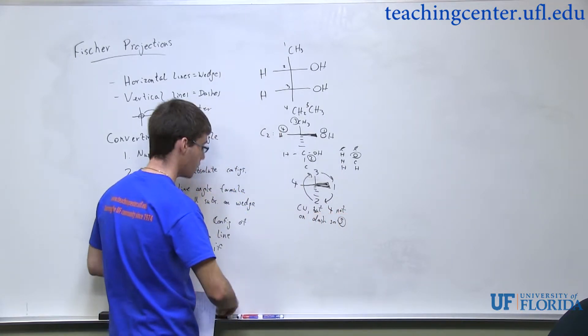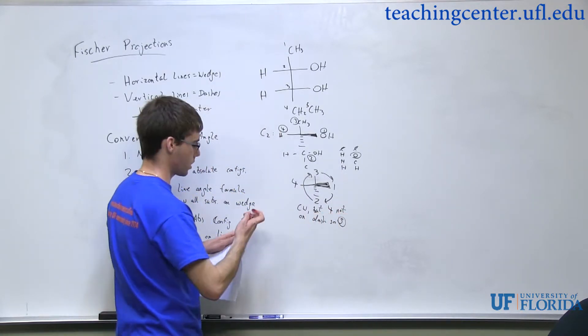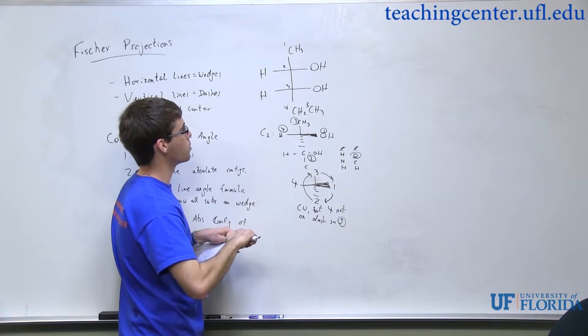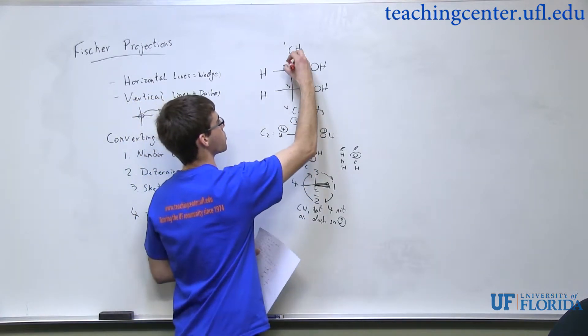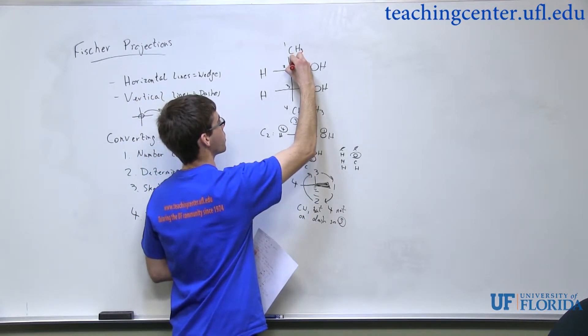I'll redraw this with just numbers for clarity. So we have one, two, three — that's clockwise, but the fourth priority group is not on a dash. So it is S. I'll label this as S in red up on the Fischer projection.